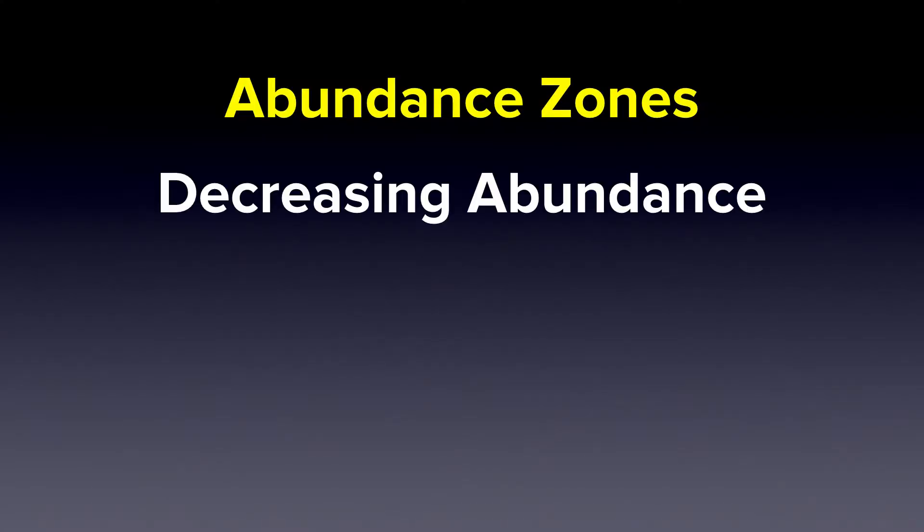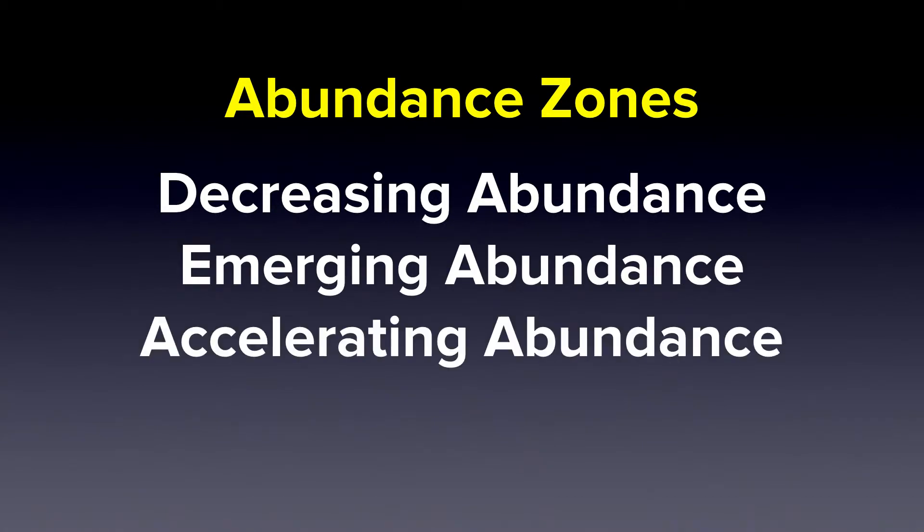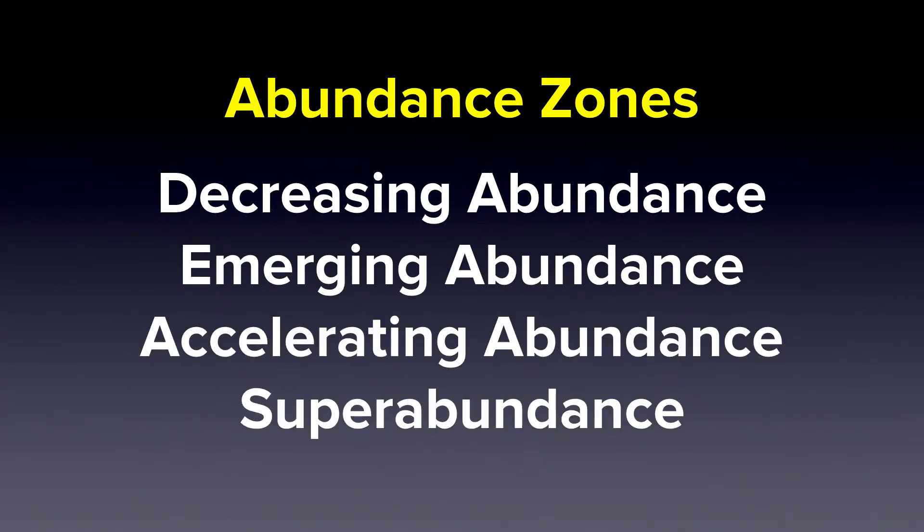The four zones are: decreasing abundance, emerging abundance, accelerating abundance, or superabundance.